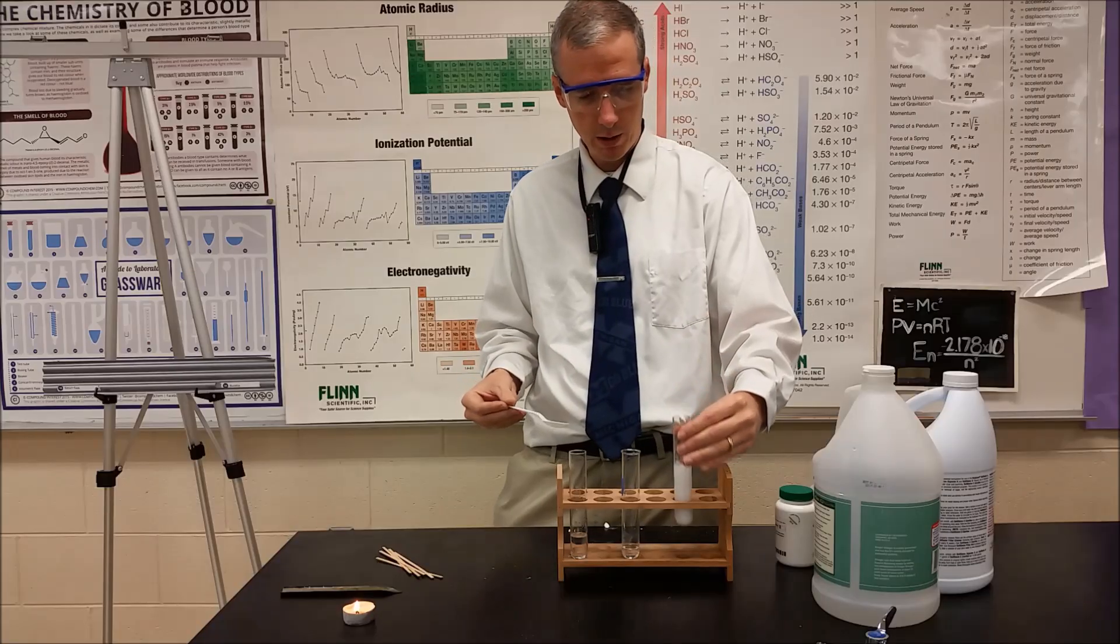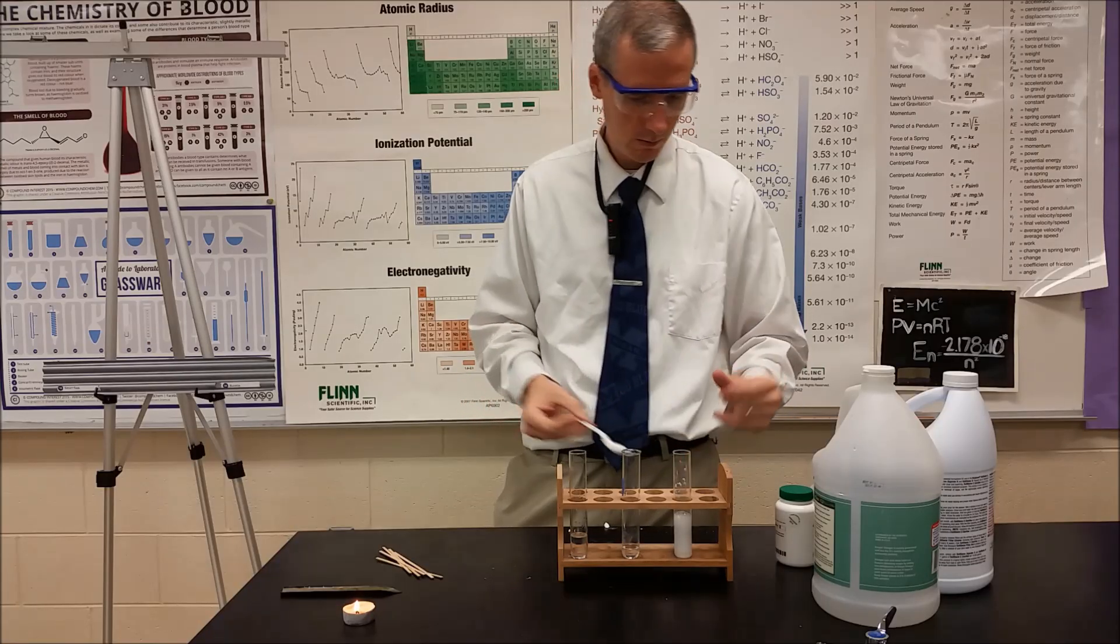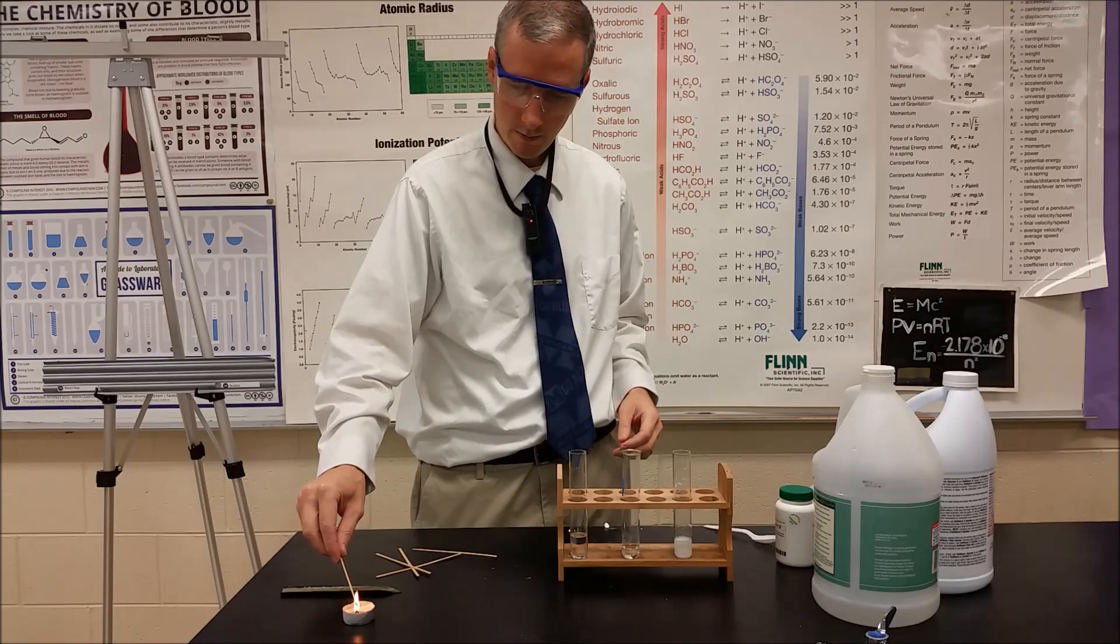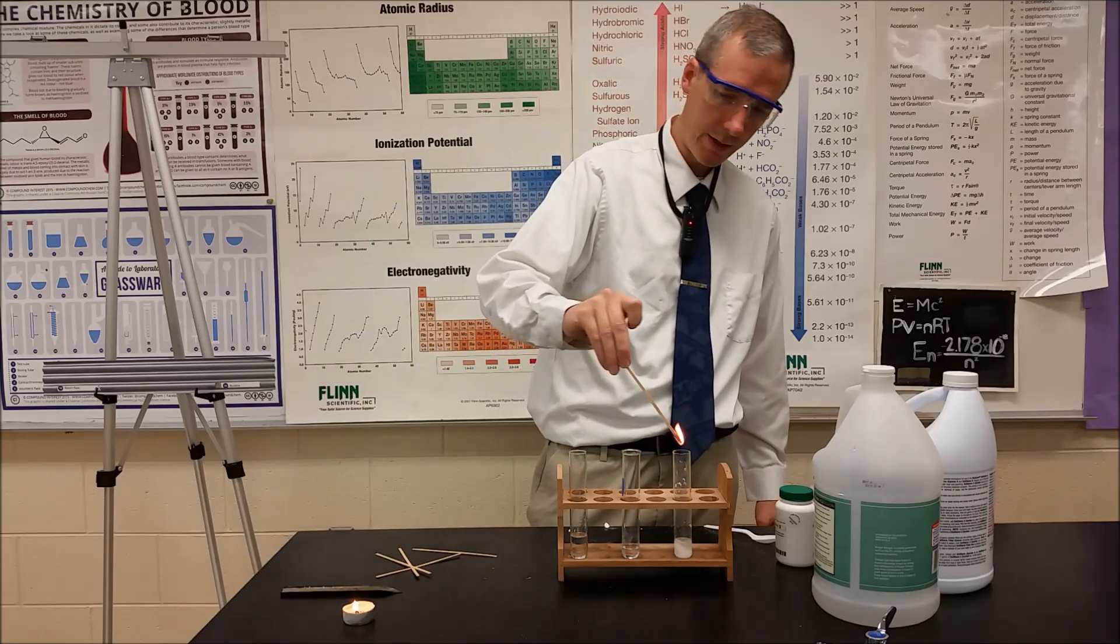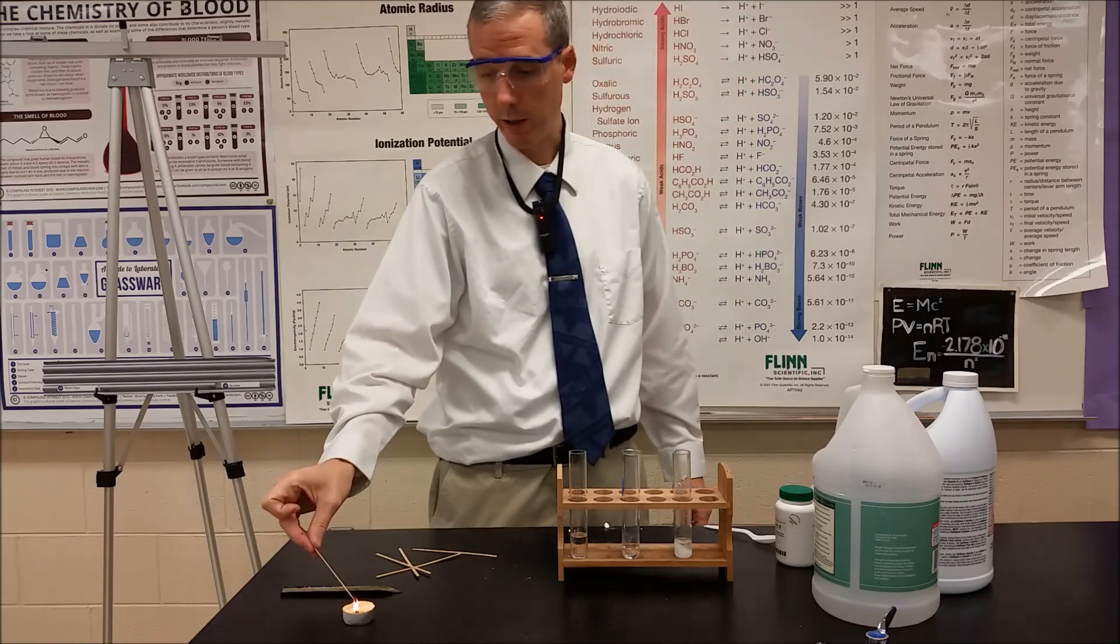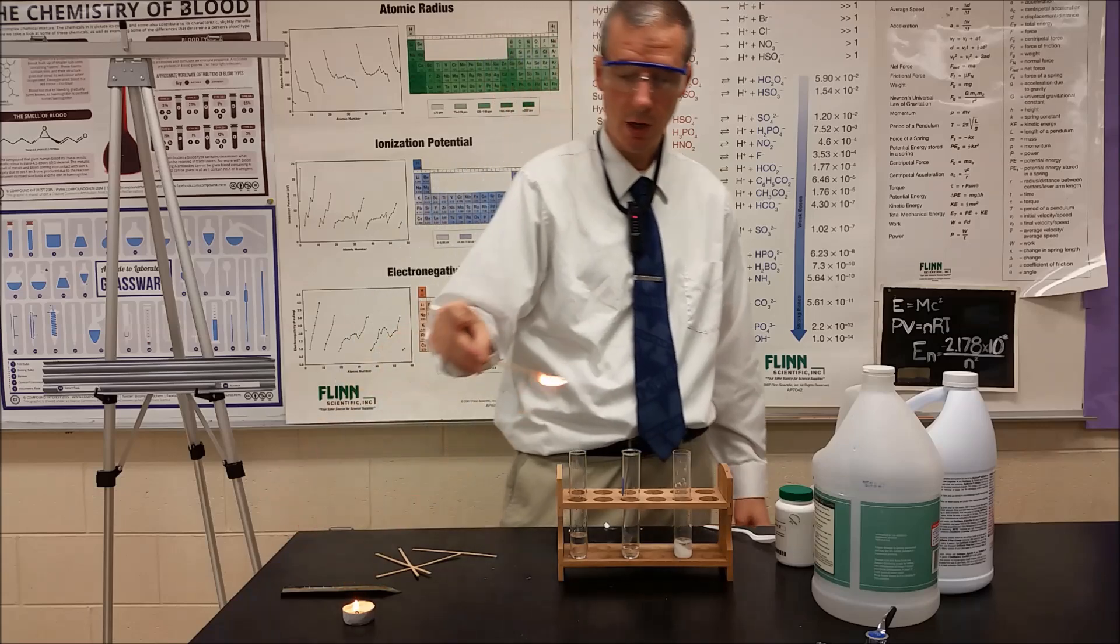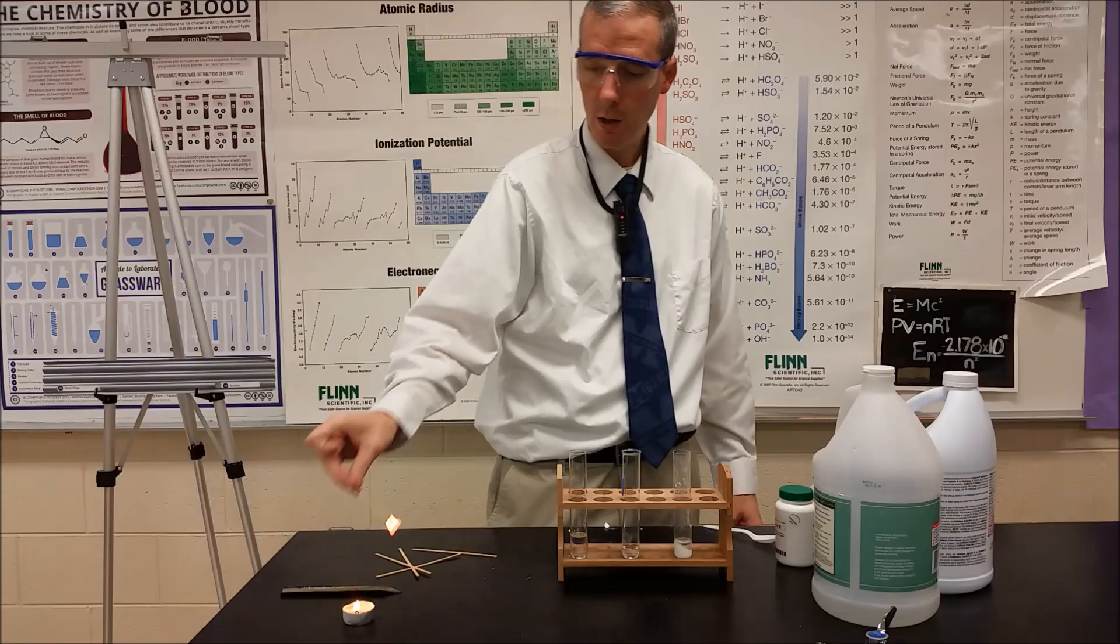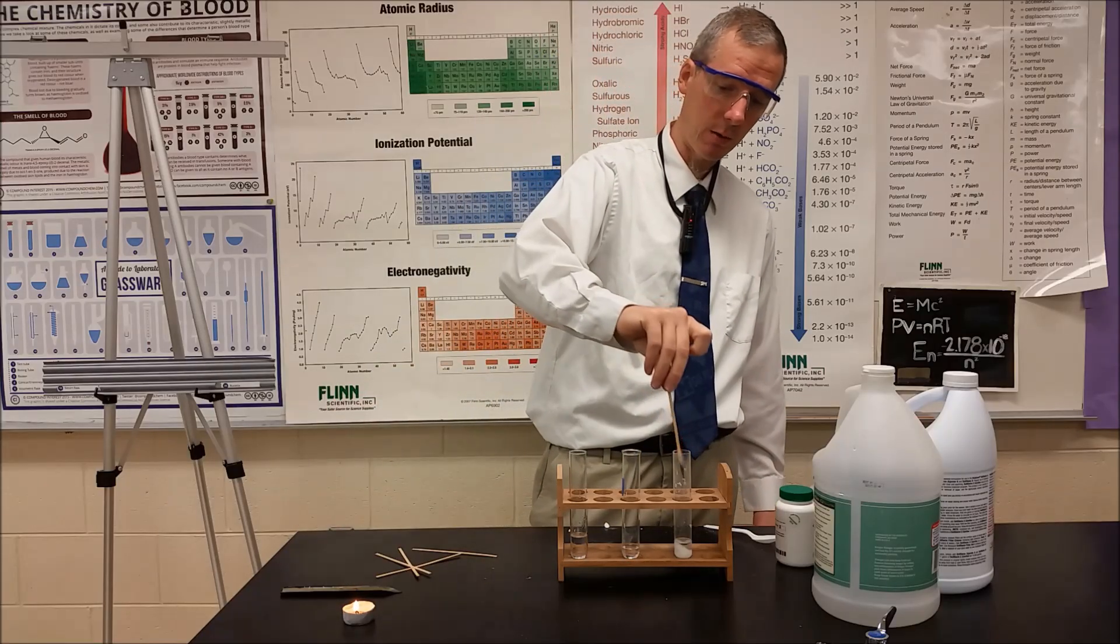So we can see there a lot of bubbling going on. We're going to take a flaming splint, put it into the flask, and when we do that we notice that the flame extinguishes very quickly. So this first gas here is carbon dioxide, and when we put a flaming splint into a container with carbon dioxide, the splint extinguishes.